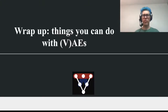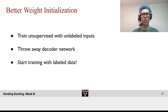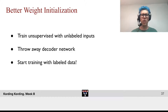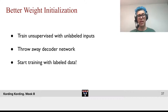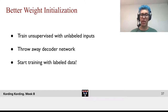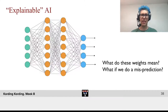Let's talk about the cool things we can do with variational autoencoders. We can do better weight initialization. We can train unsupervised with unlabeled inputs, and ultimately throw away the decoder network and start training with labeled data then.